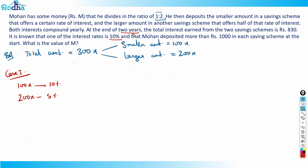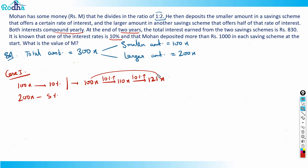For Case 1: on 100x at 10% compounded annually for two years, using the successive increase formula: 100x → 110x → 121x, so CI = 21x. For 200x at 5% for two years: 200x → 210x → 220.5x, so CI = 20.5x.